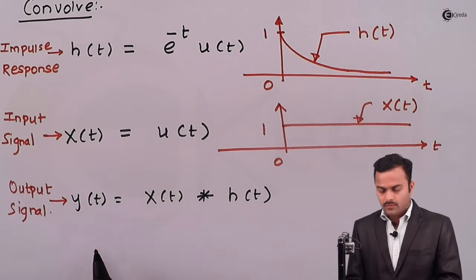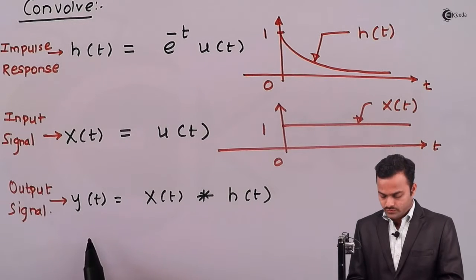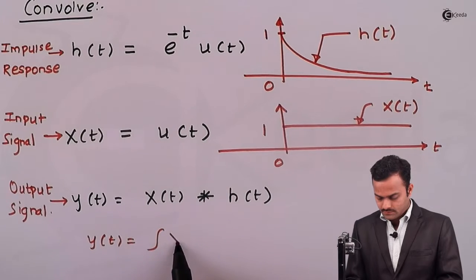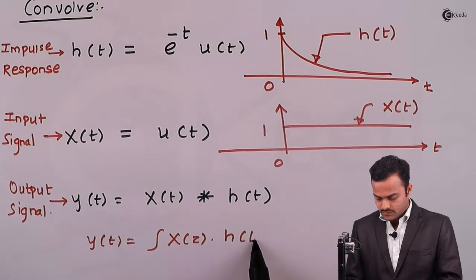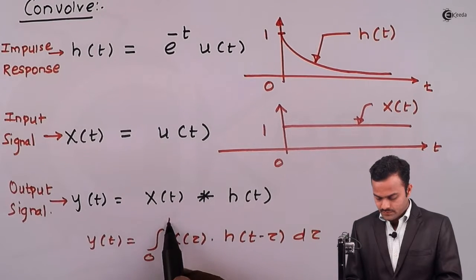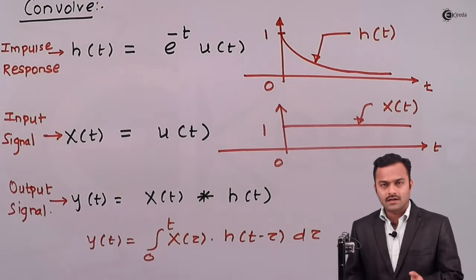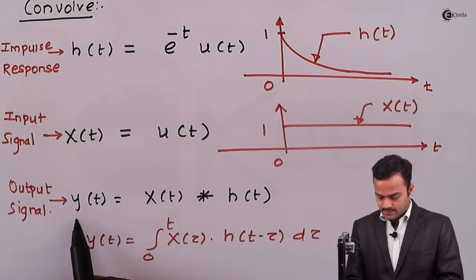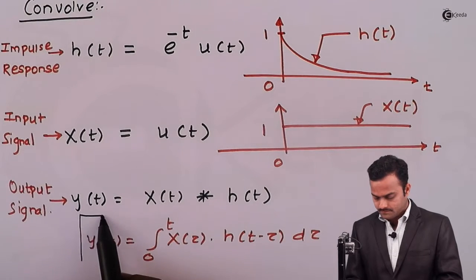The convolution formula we are going to use is: y(t) = integral of x(τ)·h(t-τ)·dτ. The limits will be determined in the end by the area which is common between the two signals.